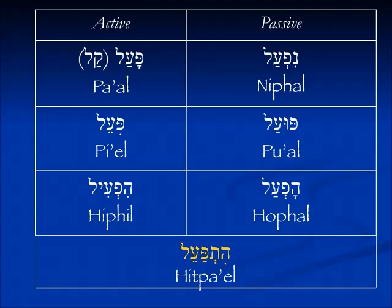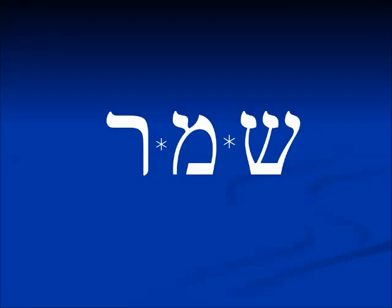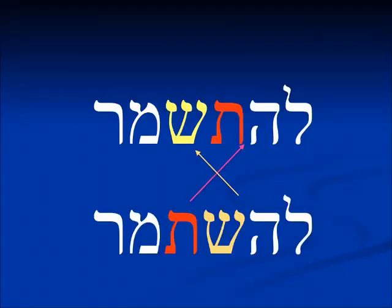Metathesis takes place in Hebrew strictly in the hitpa'el binyan. If we go back to our old verb friend shamar, if we put it in the hitpa'el, instead of having lehit-shamar — which is what we would expect — the tav and the shin change places and we get lehit-shamar, which is in fact easier to pronounce.